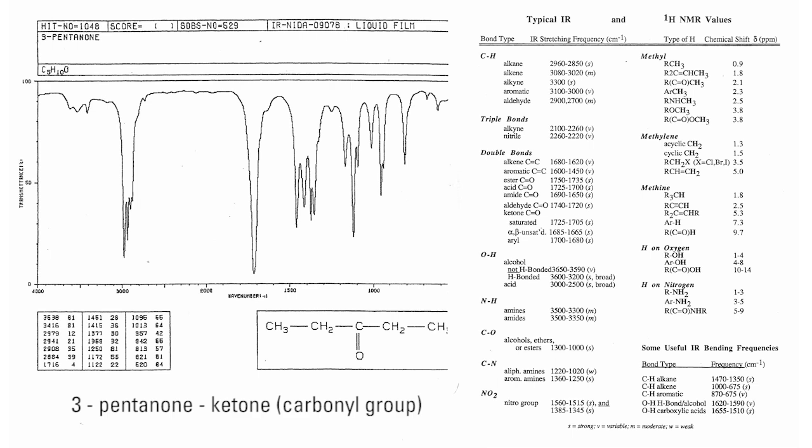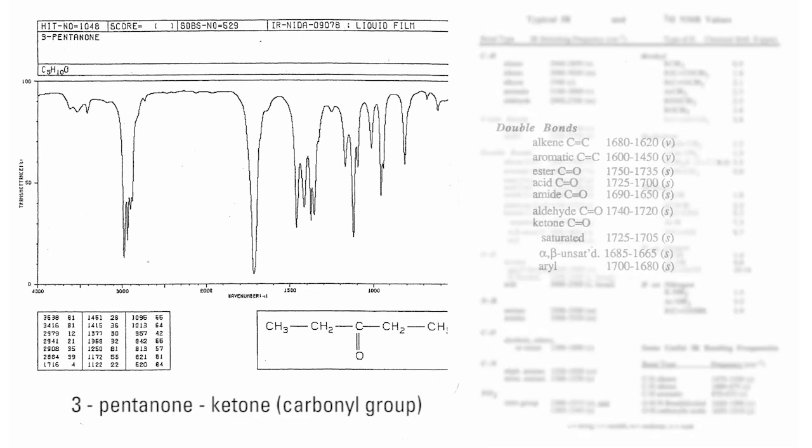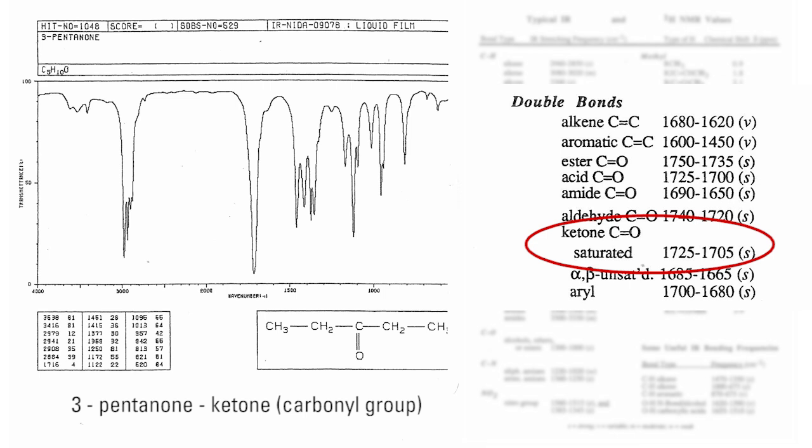Another common organic functional group that is diagnostic with IR spectroscopy is the carbonyl group. In general, carbonyl-containing compounds like ketones exhibit a strong carbon double bond oxygen stretch between 1725 and 1705 centimeters to the minus 1.